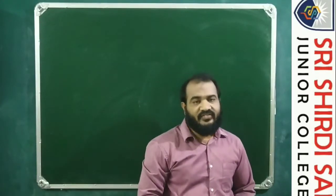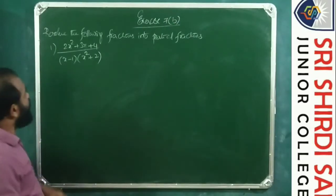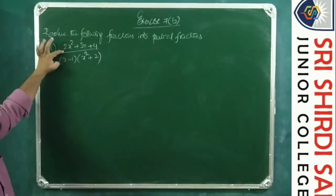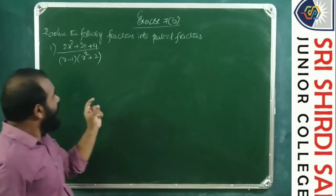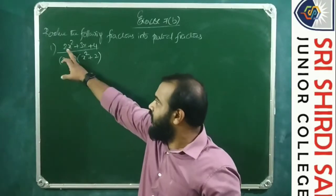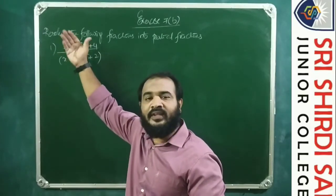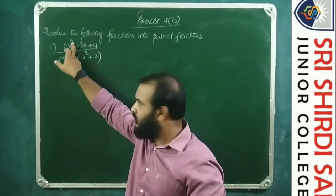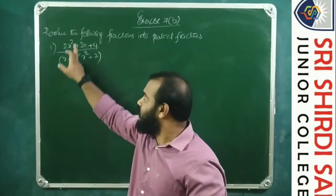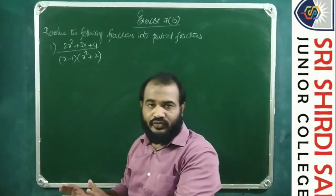Exercise 7B, Question 1: Resolve (2x²+3x+4)/[(x−1)(x²+2)] into partial fractions. First, check if this is a proper fraction. The degree of the numerator is 2, and in the denominator x·x² gives degree 3. Since 2 < 3, this is a proper fraction, so partial fractions can be applied.